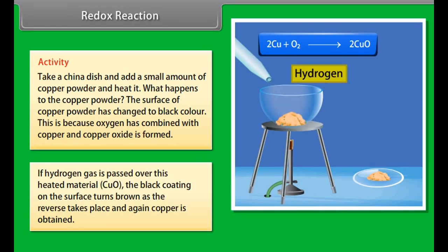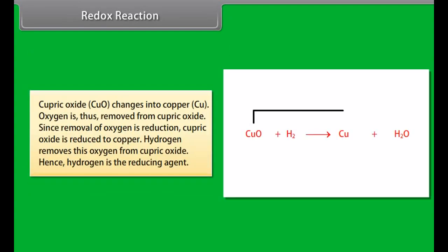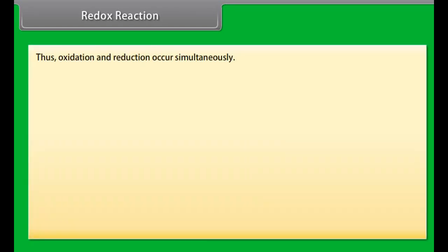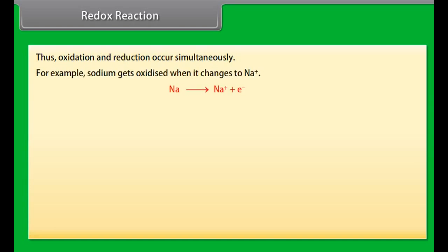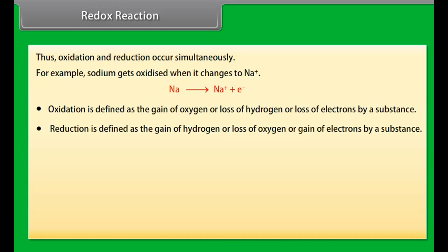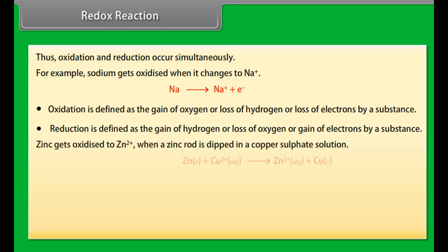Double displacement reactions: These are reactions in which two compounds exchange ions to form two new compounds, also called partner exchange reactions. They occur in ionic compounds. For example, copper sulfate and hydrogen sulfide react to form copper sulfide and sulfuric acid — the partner of copper is exchanged for the partner of hydrogen. The reaction of barium chloride and sulfuric acid to form barium sulfate is also a double decomposition reaction, and neutralization reactions are also double decomposition reactions.